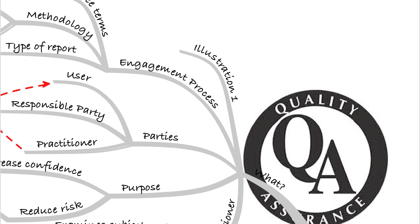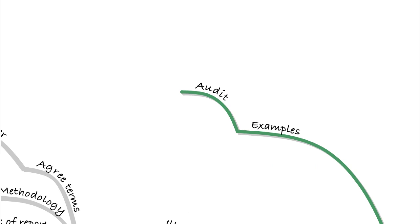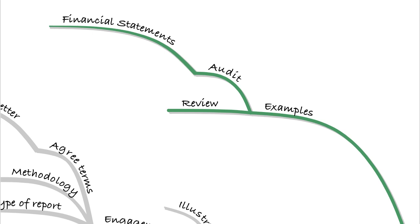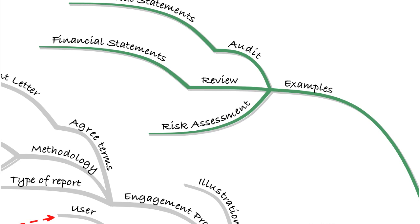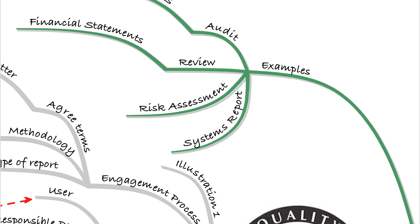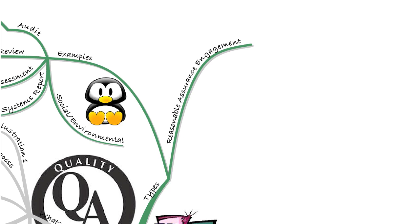On to the different types of assurance engagement. It's not just the audit. Examples are obviously the audit of the financial statements, but there are also review engagements, where the auditor reviews the financial statements. There may also be a risk assessment engagement, a systems report providing assurance over the systems, or perhaps giving assurance over the social and environmental policies of the business.